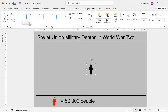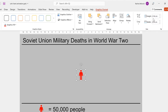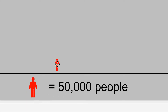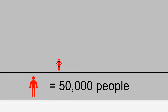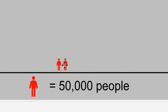Then I'll change the colour of this graphic to red and change the height to 1.36cm and then move this icon to the bottom. Then while you have the icon selected, press Ctrl D to duplicate it and then use the guidelines to line it up.